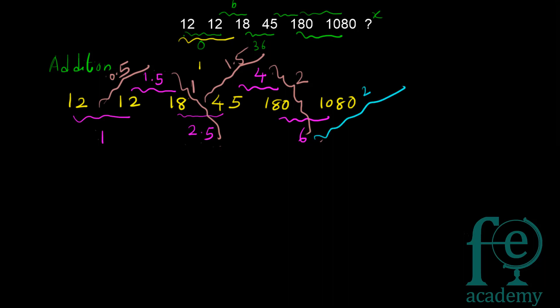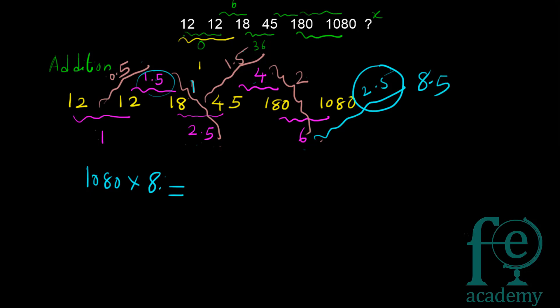Following this pattern, the next difference will be 2.5, so the next multiplicand is 6 + 2.5 = 8.5. To verify: 1 + 0.5 = 1.5, 1.5 + 1 = 2.5, 2.5 + 1.5 = 4, 4 + 2 = 6, 6 + 2.5 = 8.5. Therefore the answer is 1080 × 8.5 = 9180.